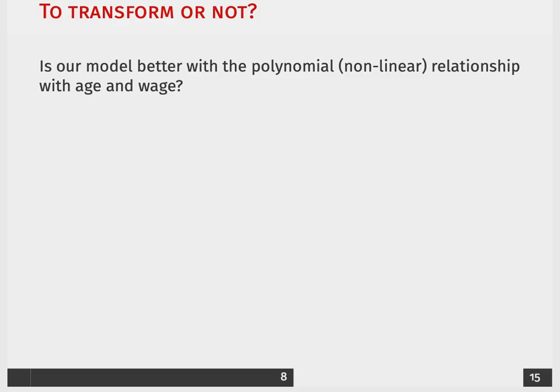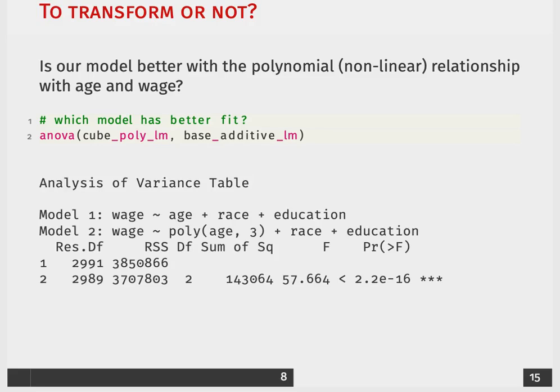Now we face the question: to transform or not? Is our model better with the polynomial relationship between age and wage, or are we better off with just our base linear model? The best way to do this is running a likelihood ratio test, which we can do using the function ANOVA. I'm putting in my model that has the cubic polynomial as well as the base additive model.